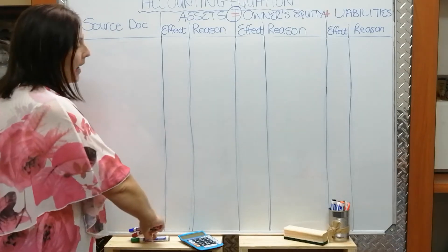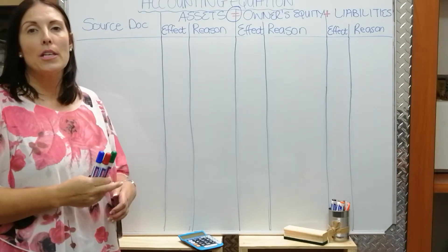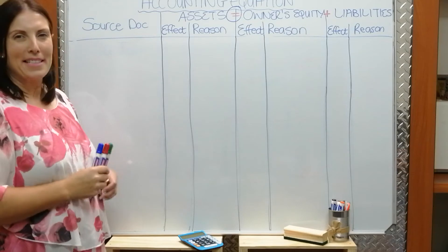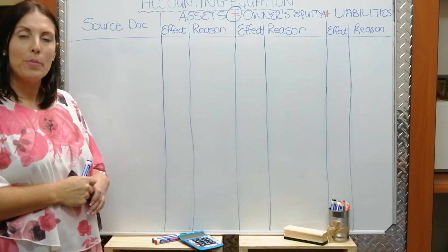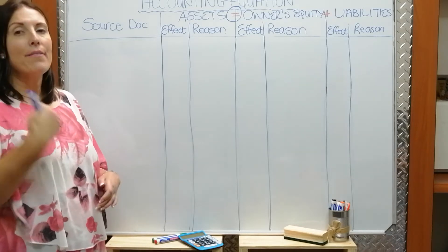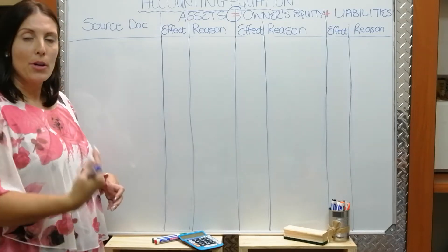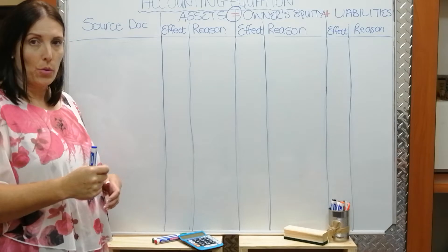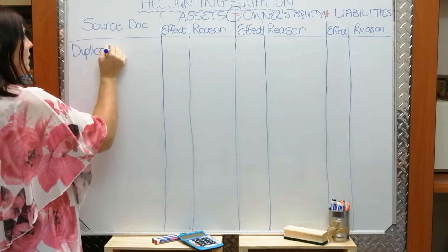So let's start with the source document. I like to make use of different colors when I explain the accounting equation, so if you've got them on hand, it's nice to also use them when you complete your exercises. So what is our source document in a credit sales transaction? Remember we sold on account or on credit to the debtor. Whenever we sell on credit, our source document or the document that we issue is a credit invoice. The client will always get the original invoice, so our source document is then the duplicate invoice.